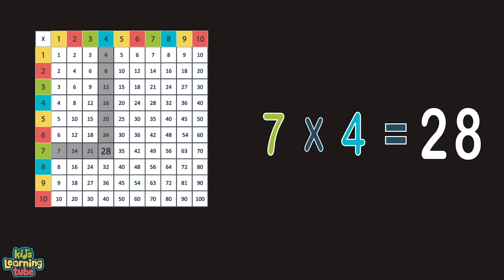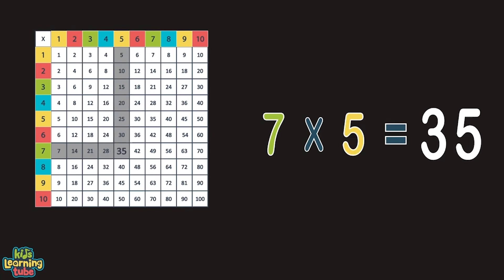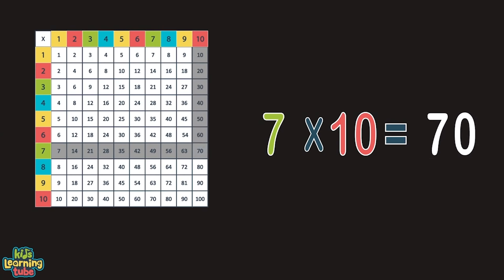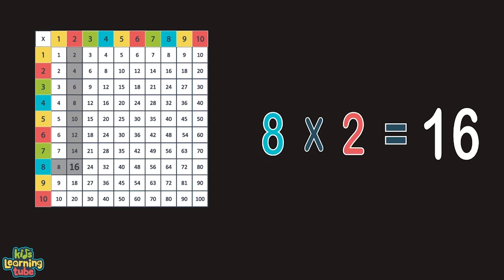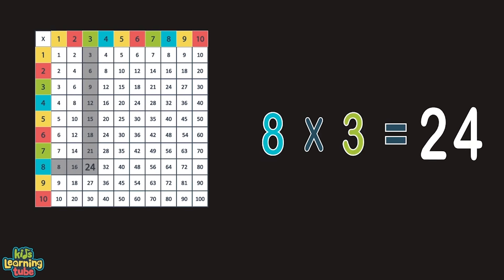Forty-two, forty-nine, fifty-six, sixty-three, and seventy. You're beginning to thrive. This is great. We're counting by eight: eight, sixteen, twenty-four, thirty-two, and forty. Forty-eight, fifty-six, sixty-four, seventy-two, and eighty.